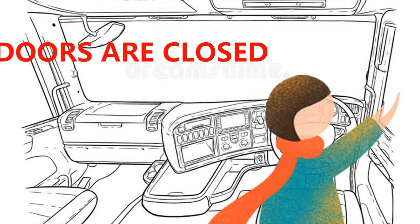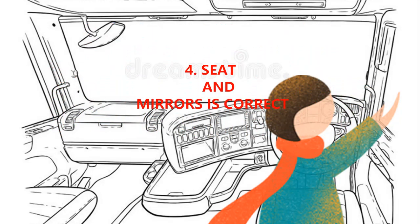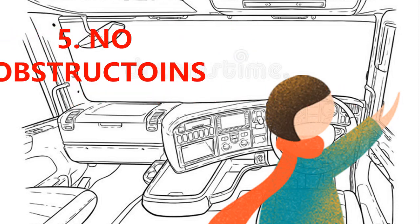Mention that all the doors are closed, the handbrake is up, and the gears are in neutral. The seat and mirrors are adjusted correctly, and there are no obstructions in the vehicle.